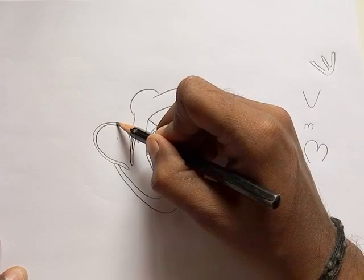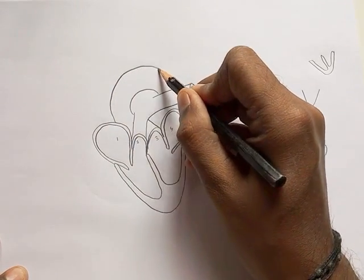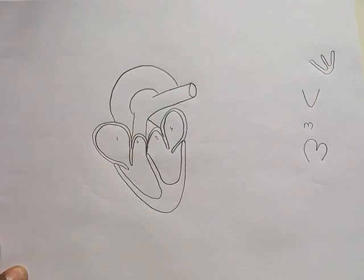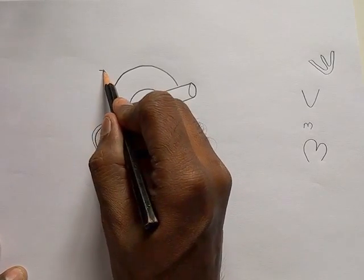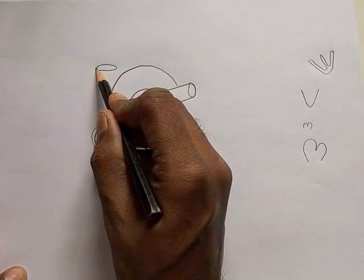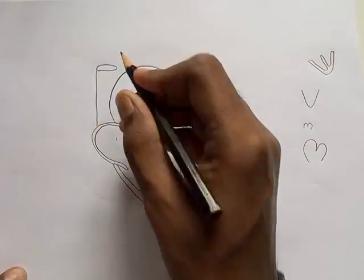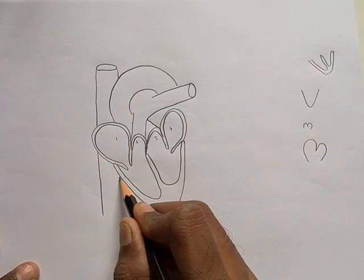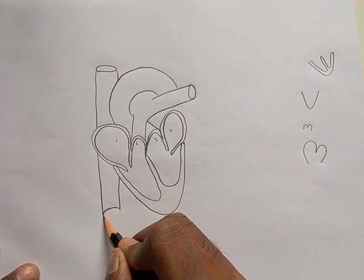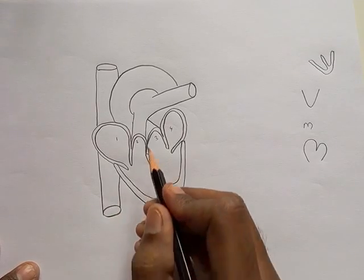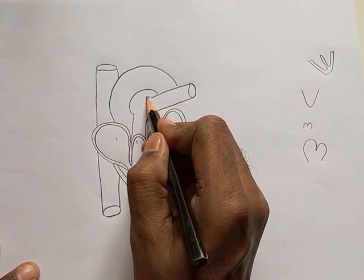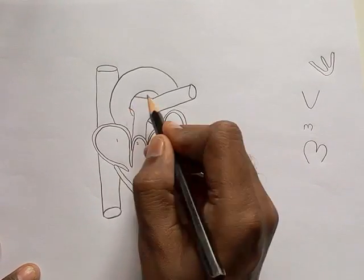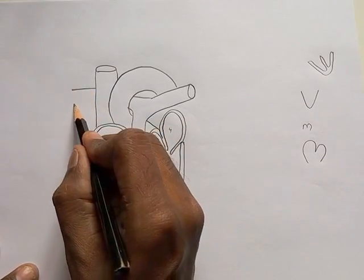Now from this point you are going to draw the biggest portion that is called aorta. Now once this is done, let's draw the superior vena cava, the inferior vena cava. Now this part which we have drawn, the pulmonary trunk, is going to open somewhere here behind the superior vena cava, so we put it in this way. I hope it's clear.